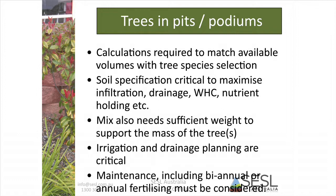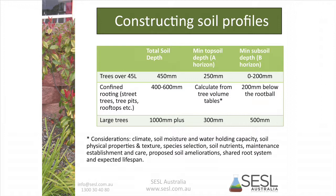If growing a large tree in a very organic mix, we know we'll get shrinkage in that mix over time and the volume of the growing medium will reduce. Irrigation and drainage keep coming up, and maintenance including annual or biannual fertilizing must be considered. For large trees, we're looking at a minimum of a metre of soil depth, with considerations including climate, moisture, water-holding capacity, shared root systems, and expected lifespan of the tree.